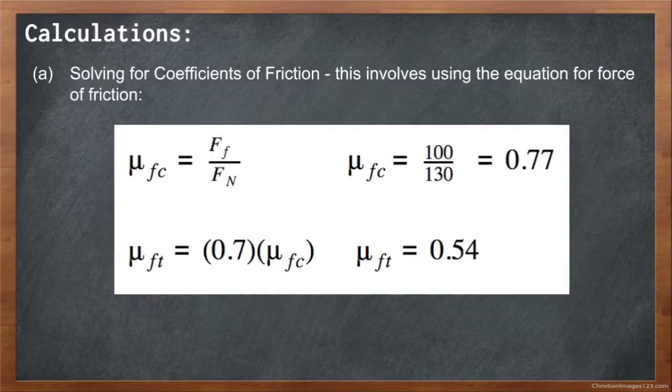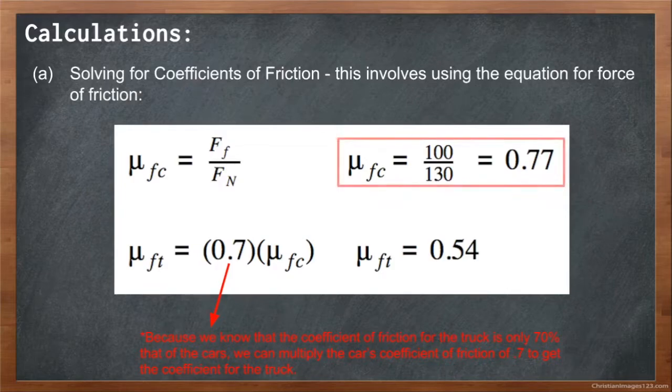Now we will be doing the calculations portion. Part A, solving for the coefficients of friction, involves using the equation for force of friction. When rearranged, we get the coefficient of friction equals the force of friction divided by force of normal. When we plug in 100 for the force of friction and 130 for the force of normal, which is the weight of one tire, we get 0.77. Because we know that the truck's coefficient of friction is only 70% that of the car's, we can multiply it by 0.77 and get 0.54.